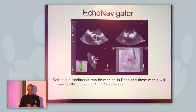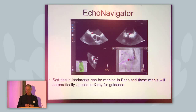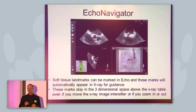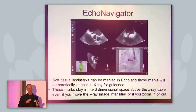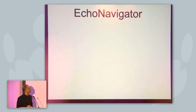Here you can see an example: soft tissue landmarks can be marked in echo, and those marks will automatically appear in the x-ray for guidance. These marks then stay in the three-dimensional space, regardless of whether you move the table or the patient, or whether you remove or change the position of the image intensifier — these marks always stay in the three-dimensional space.